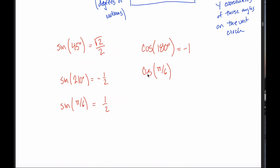By the same logic, I could figure out the cosine of pi over 6. We already looked at that point — the sine of pi over 6 equals one half, so the y-coordinate of that point is one half. The x-coordinate is going to be root 3 over 2. Understanding sine and cosine is as simple as knowing that sine always refers to the y-coordinate on the unit circle and cosine always refers to the x-coordinate on the unit circle.